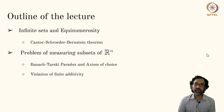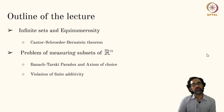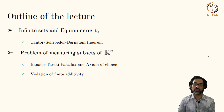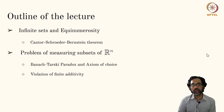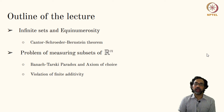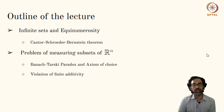One of the main theorems in this topic is the Cantor-Schroeder-Bernstein theorem, which gives you a condition under which two arbitrary infinite sets are equinumerous — meaning that there exists a bijective correspondence between the two.